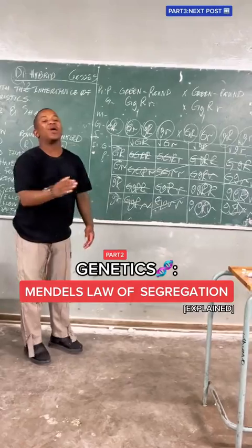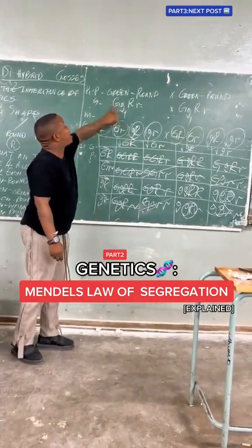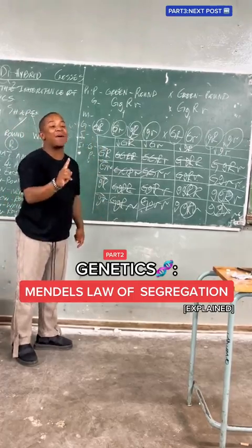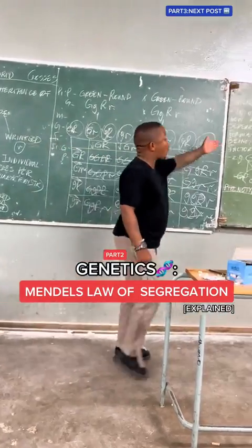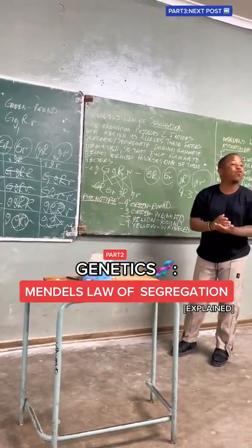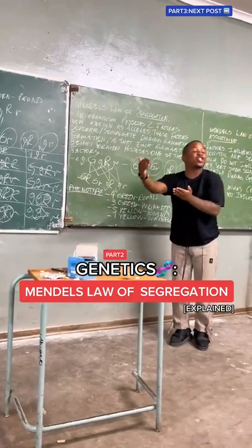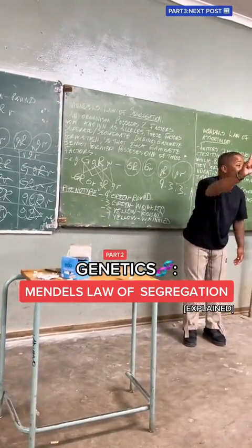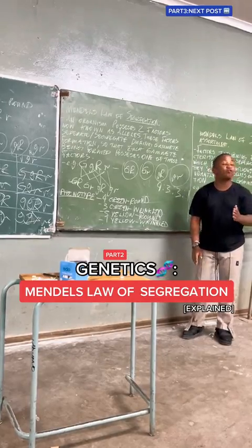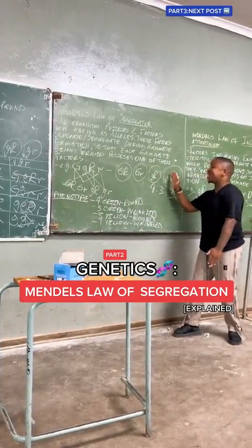They are heterozygous for both characteristics. The word 'hetero' means different; the word 'zygous' means expressed. So they have already expressed different characteristics. Now, coming to the Law of Segregation: when an organism possesses two factors — now known as alleles — these two factors separate or segregate, so that each gamete formed possesses at least one of these factors.